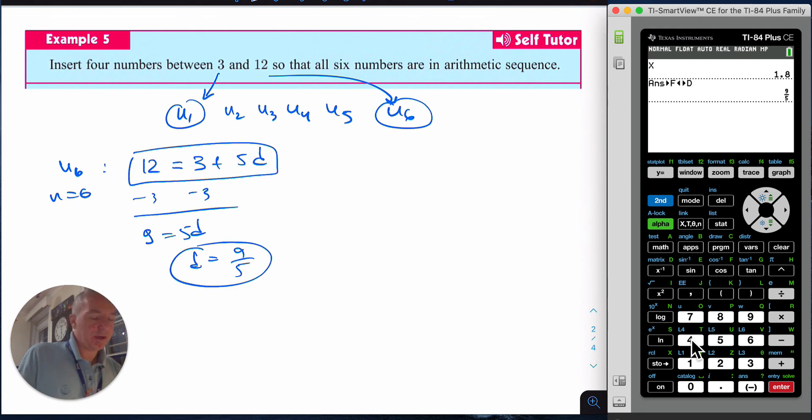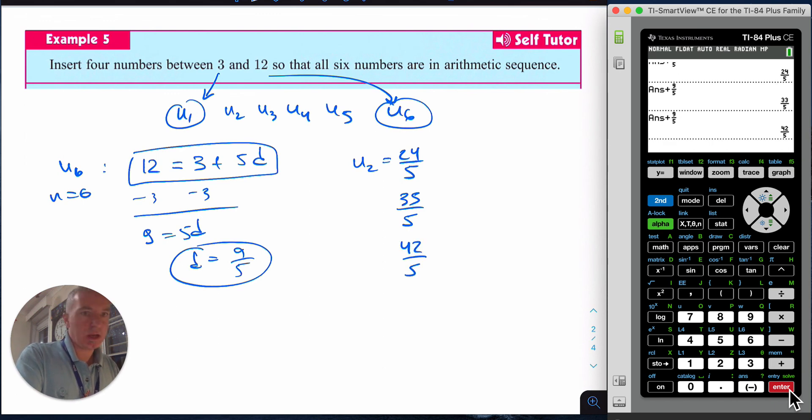The first term is 3. I press enter plus 9/5 and I get 24/5, so that's my u2. Then I just press enter and find the next term 33/5, then the next one 42/5, then the next one 51/5, and the next one is 12 which is u6.